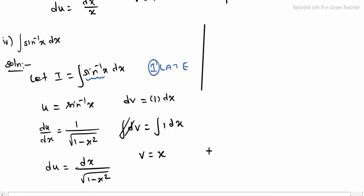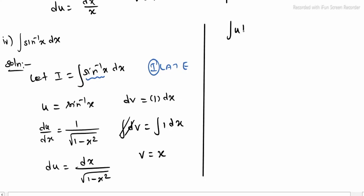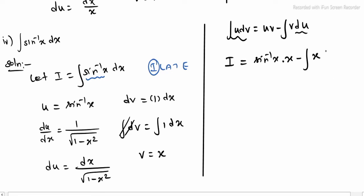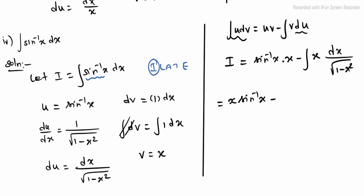Applying the formula: integrating u dv equals uv minus integrating v du. So i equals sine inverse x into x minus integrating x into dx divided by root of 1 minus x square, which we rewrite as x into sine inverse x minus integrating x dx divided by root of 1 minus x square. To solve this integral, we use substitution.